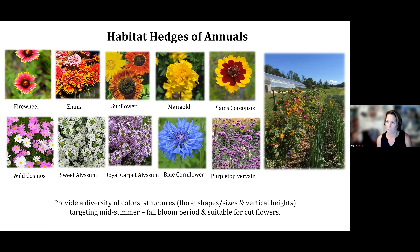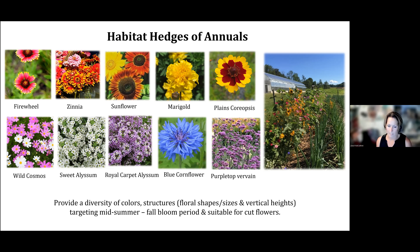With a lot of these fall-blooming plants, we really hope that the beneficials will overwinter in the vicinity of plantings to emerge in the spring ready to provide pest management and pollination. For example, bumblebee queens survive winters after mating in the fall, and then they establish new colonies in the spring. So they really need those fall resources in order to make it and do their thing.